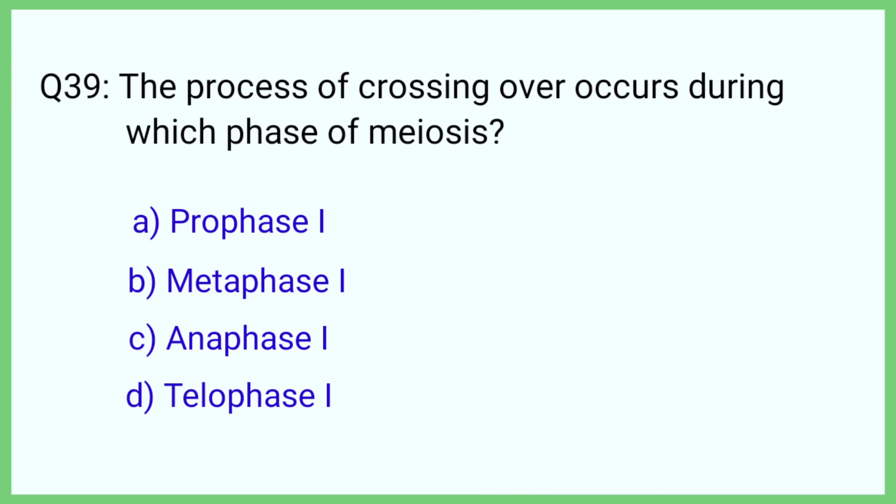Question number 39. The crossing over process of the cell cycle occurs during which phase of meiosis? The correct answer is option A: Prophase 1.